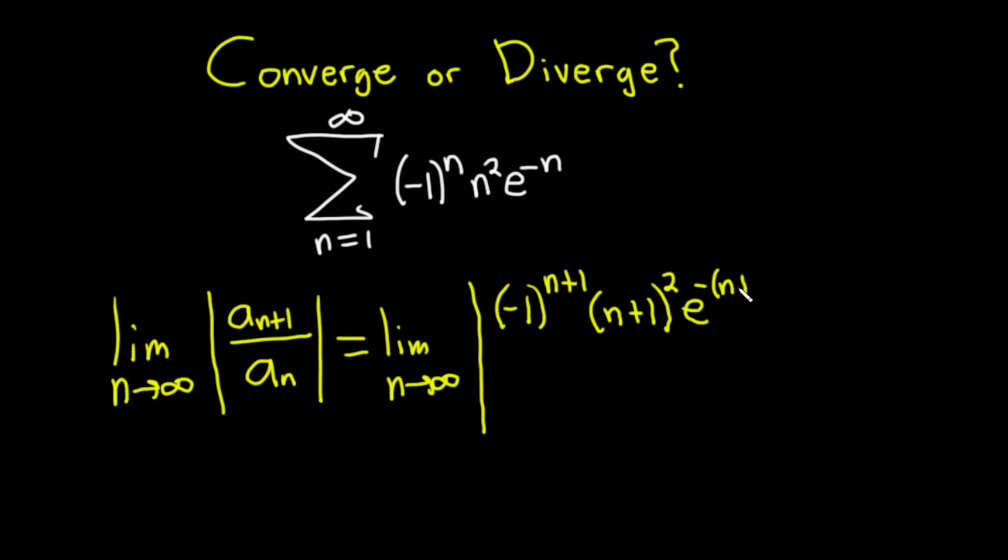All divided by a_n, which is just (-1)^n times n^2 times e^(-n).